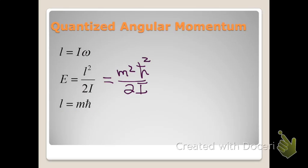Because m is an integer, L is also quantized. The L values for angular momentum can only be 0, plus or minus h-bar, plus or minus 2 h-bar, etc.